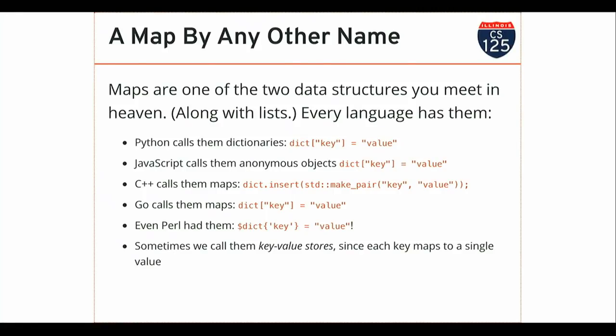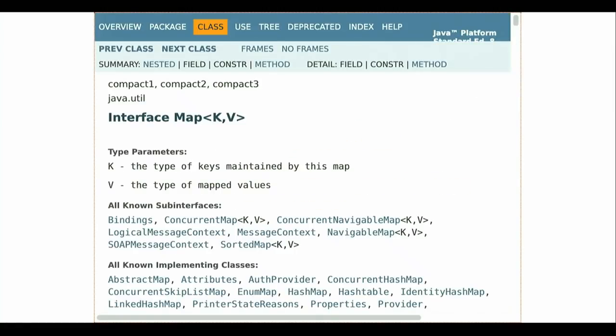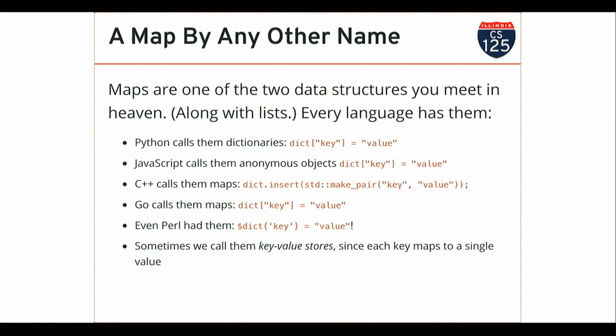The terminology differs — sometimes they're called maps, sometimes dictionaries, sometimes anonymous objects — but in all cases, I can associate an arbitrary value with an arbitrary key, where the key and value can be any type of data I can represent in the language. Not just an int, not just a string — anything.